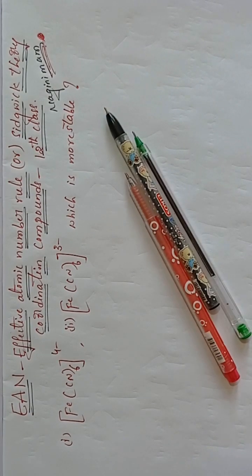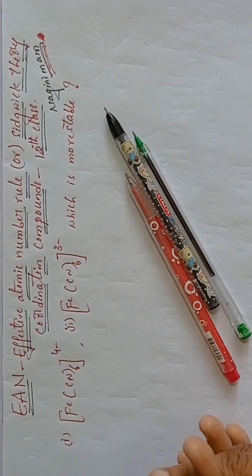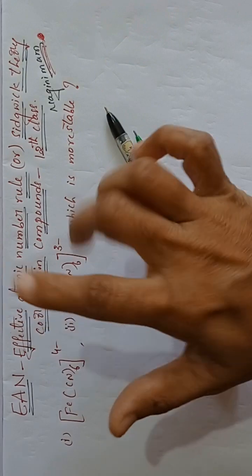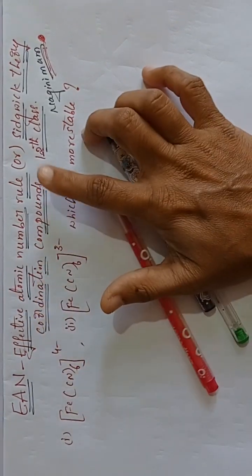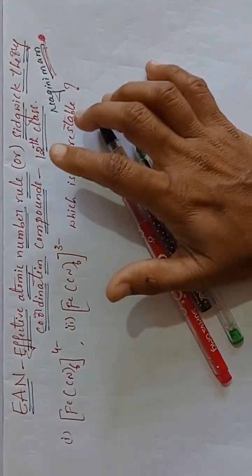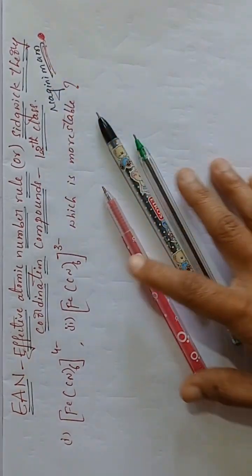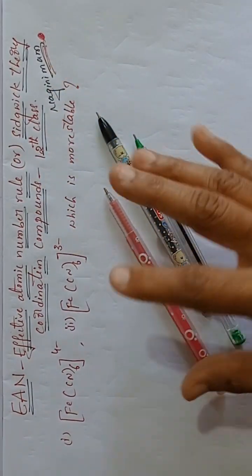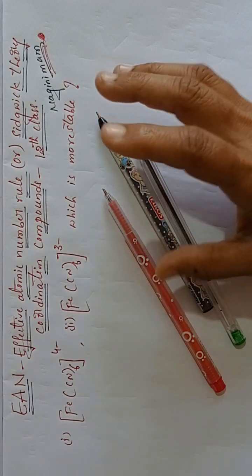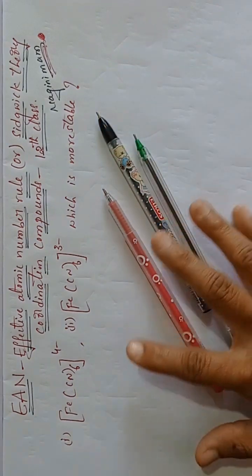Good morning students. Thank you very much for clicking on my video. I am your Nagini Ma'am, chemistry mentor. In today's section I am going to discuss about the EAN, means Effective Atomic Number, or Sidgwick Theory. It was given by Sidgwick. This is the topic from Coordination Compounds, 12th class, 2nd PUC.